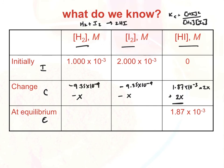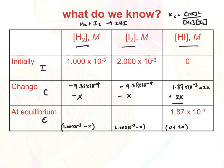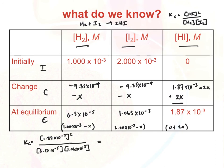Now that we know our change values, we can calculate the equilibrium concentrations of H2 and I2 by combining initial concentrations with the change — subtracting 9.35 × 10⁻⁴ from each original concentration. Similarly, we add the change to the initial concentration of HI since it's increasing. These values are then plugged into our equilibrium expression to solve for Kc, giving us the final equilibrium constant.